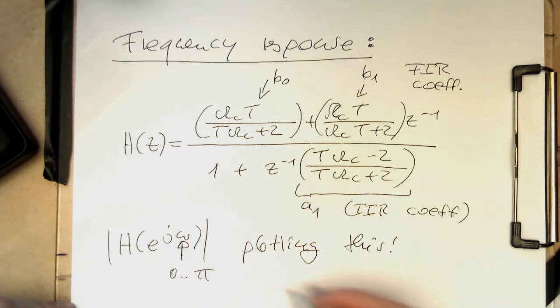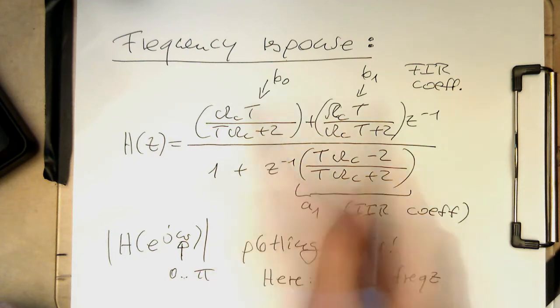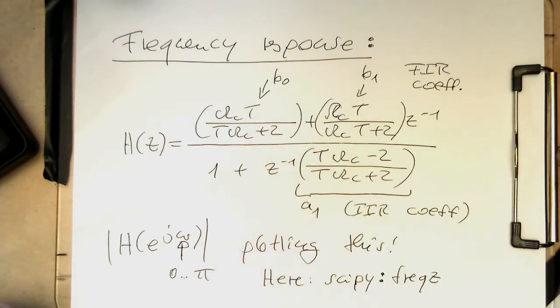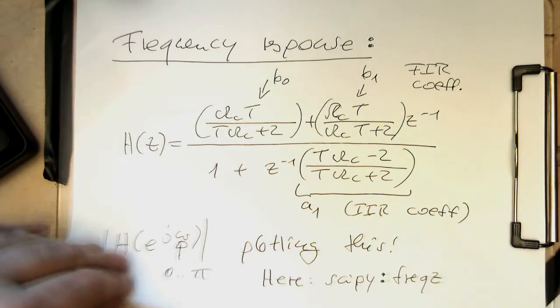And so here we use the scipy command frequency z. And that's the one which is generating us, calculating us this here already. So just making life a bit easier. We're just putting these coefficients in there, and then the frequency z command gives us the response back.